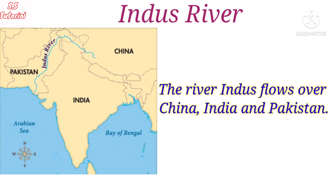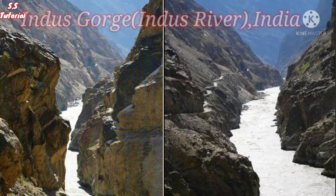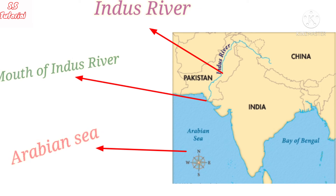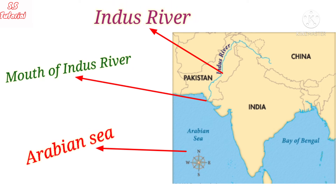The Indus river is one of the most important rivers which flows over three countries: China, India, and Pakistan. When the Indus river enters into Ladakh in Indian territory, it passes through a very beautiful gorge named the Indus gorge around the Nanga Parbat. When the Indus river enters Pakistan, it takes a sharp southward direction and flows over Pakistan, and finally enters into the Arabian Sea.